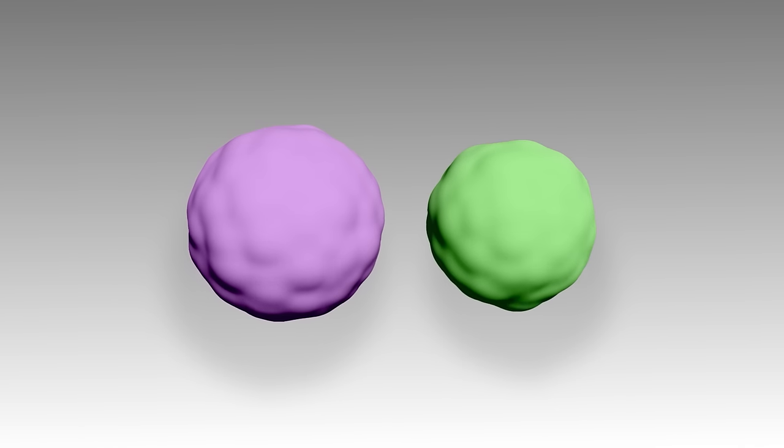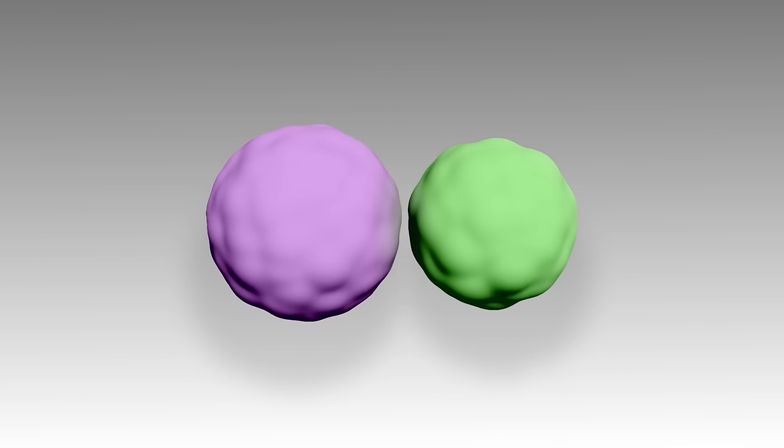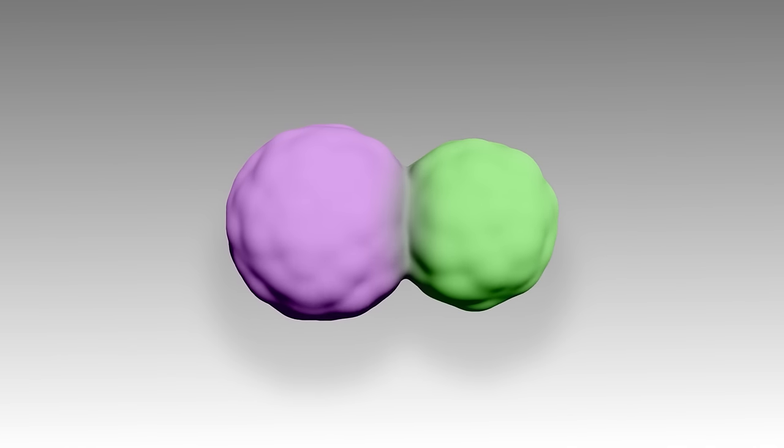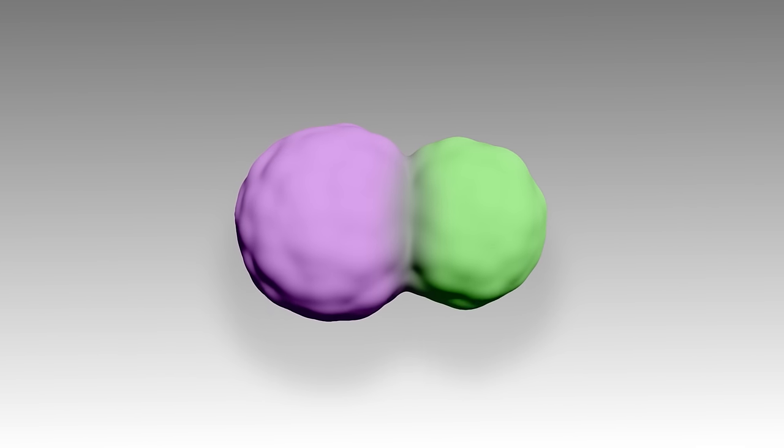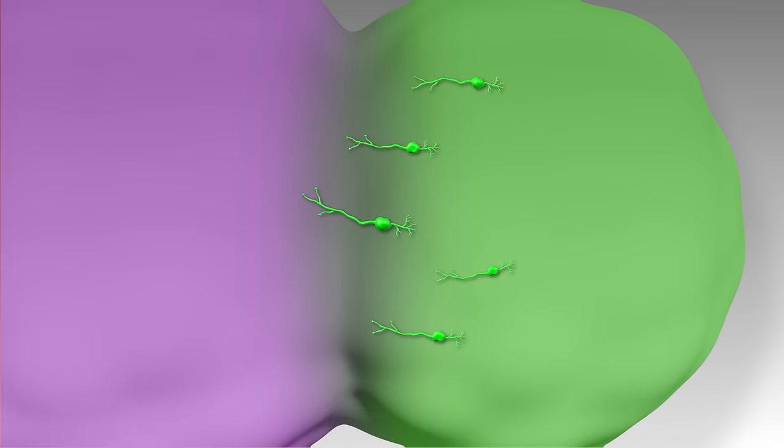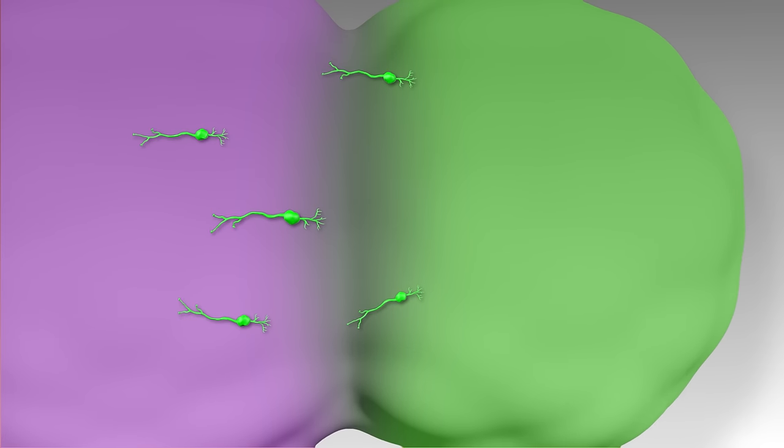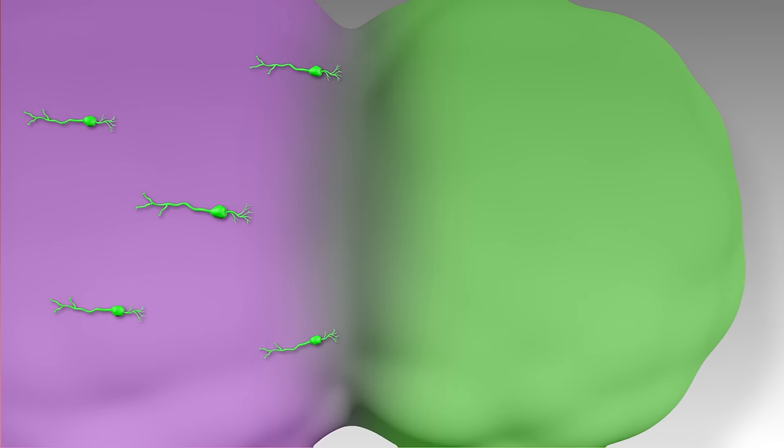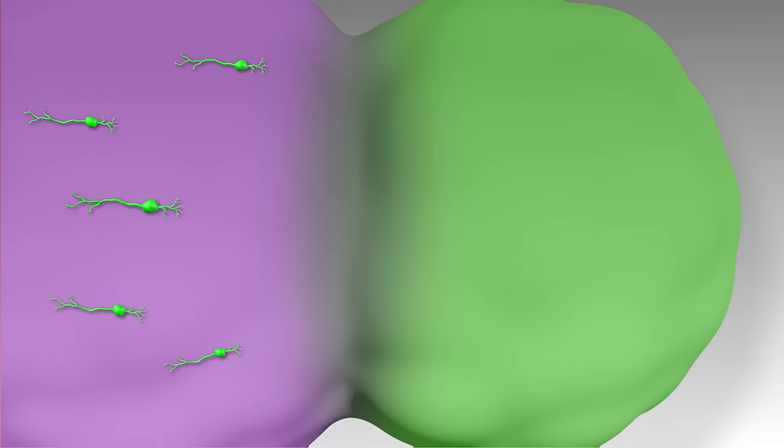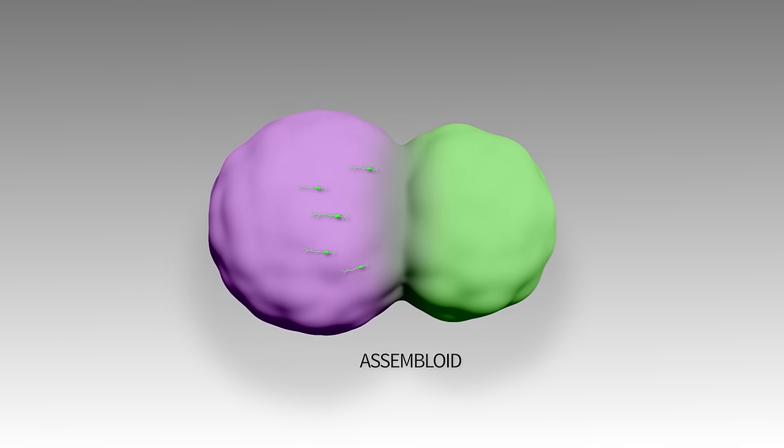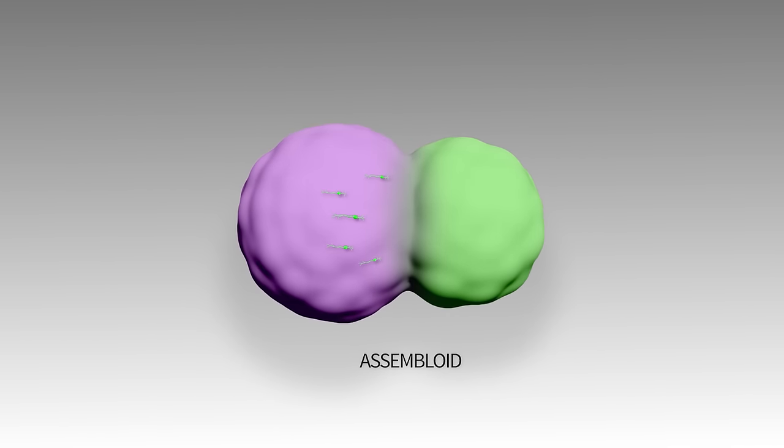When we put these two together, we discovered something really fascinating. They started to communicate with each other, they fused, and specific cells started to move and assemble into networks much as they would in an actual brain. So we call this assembly of organoids assembloids and explore other combinations to create models that replicate brain function.